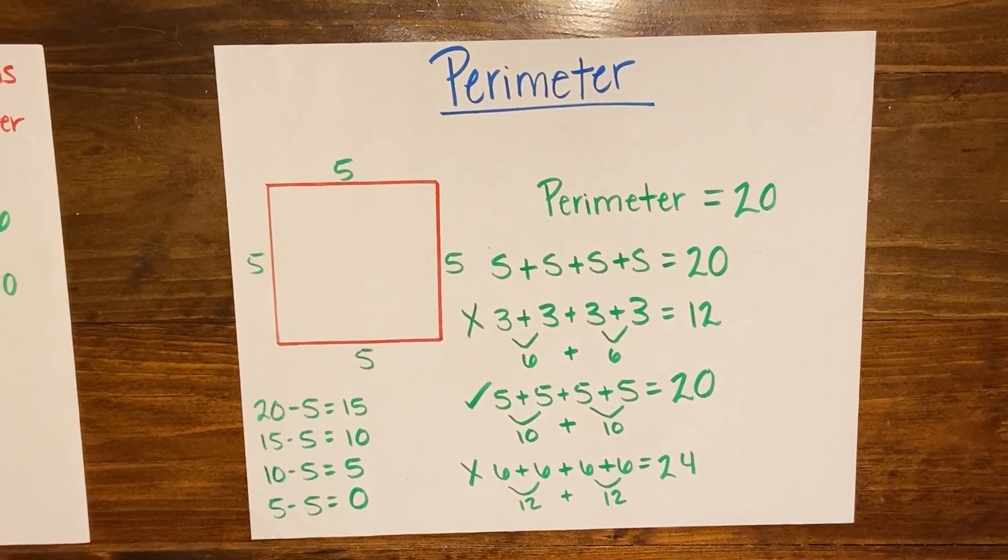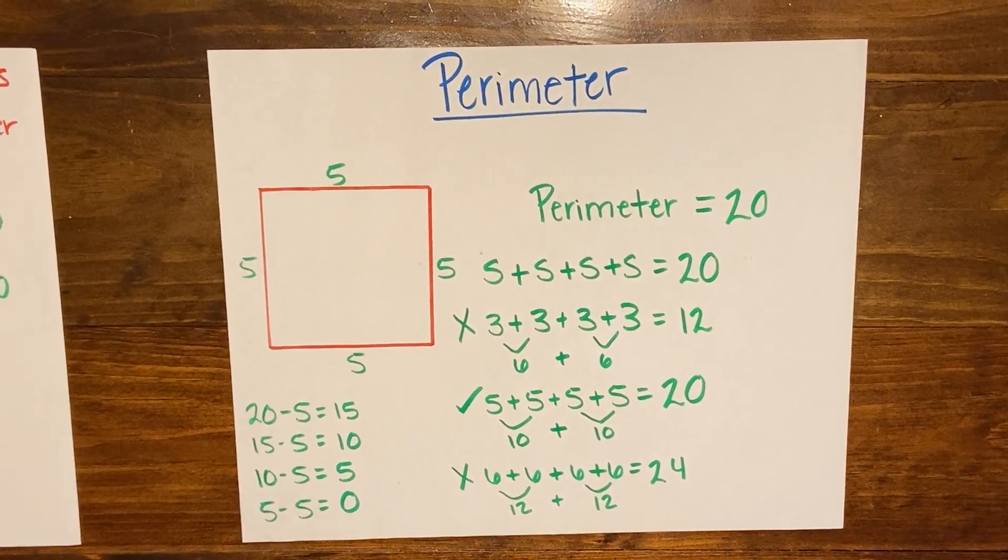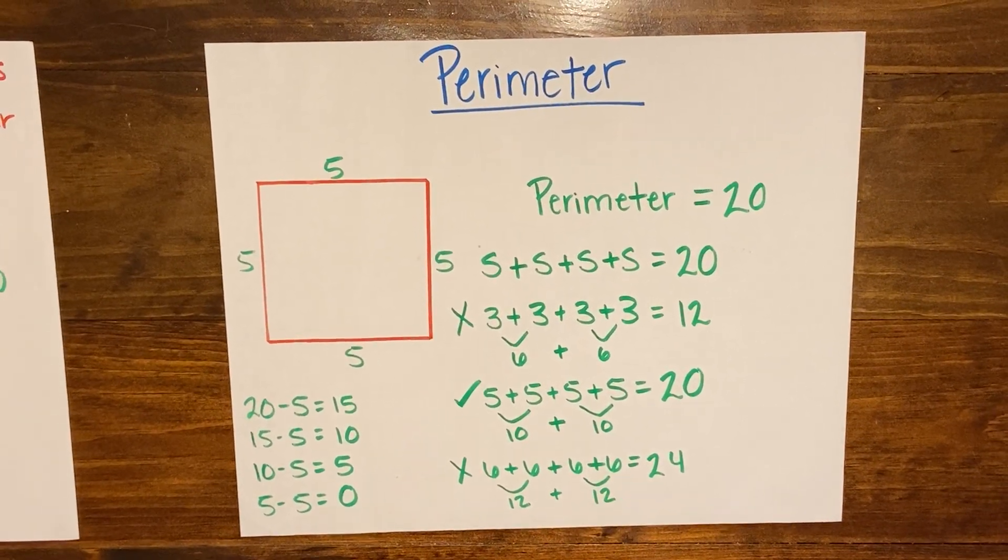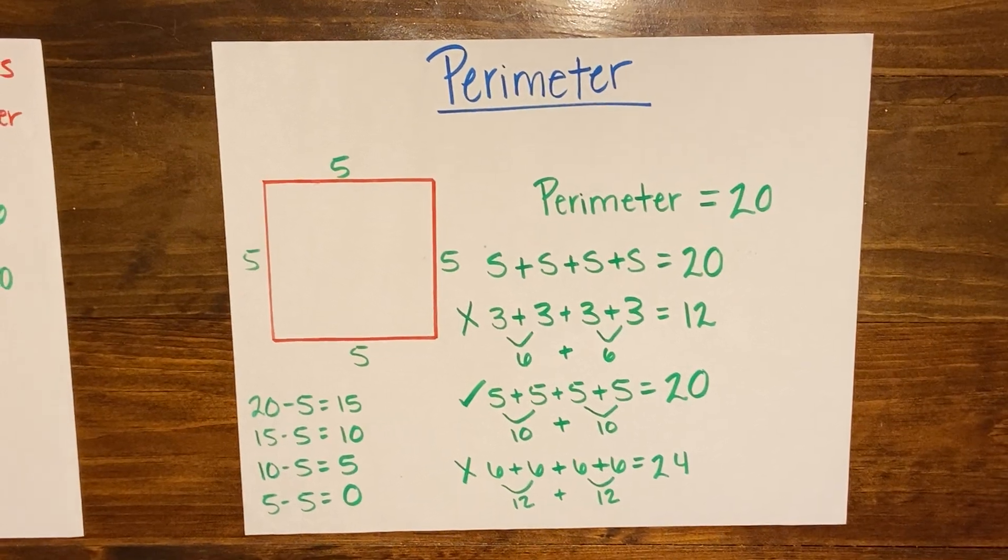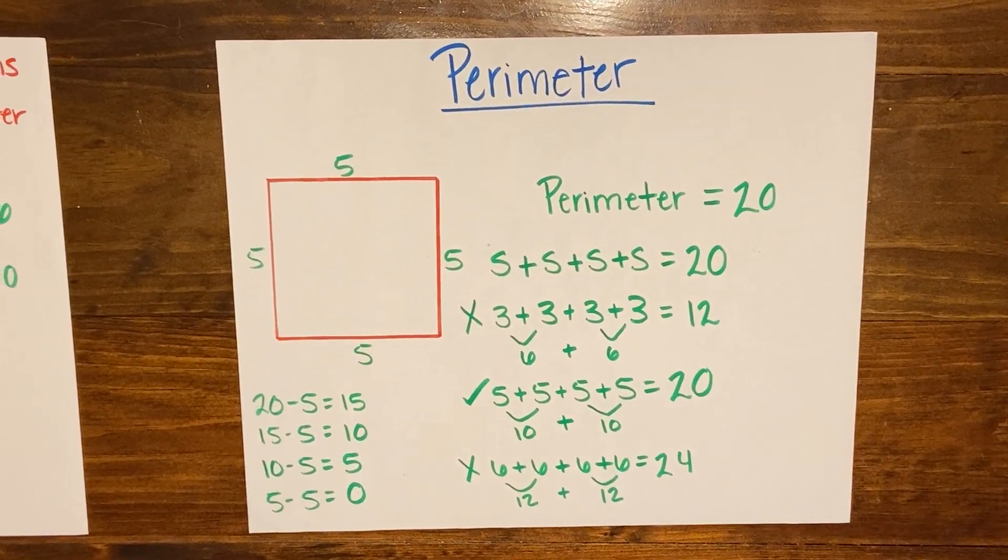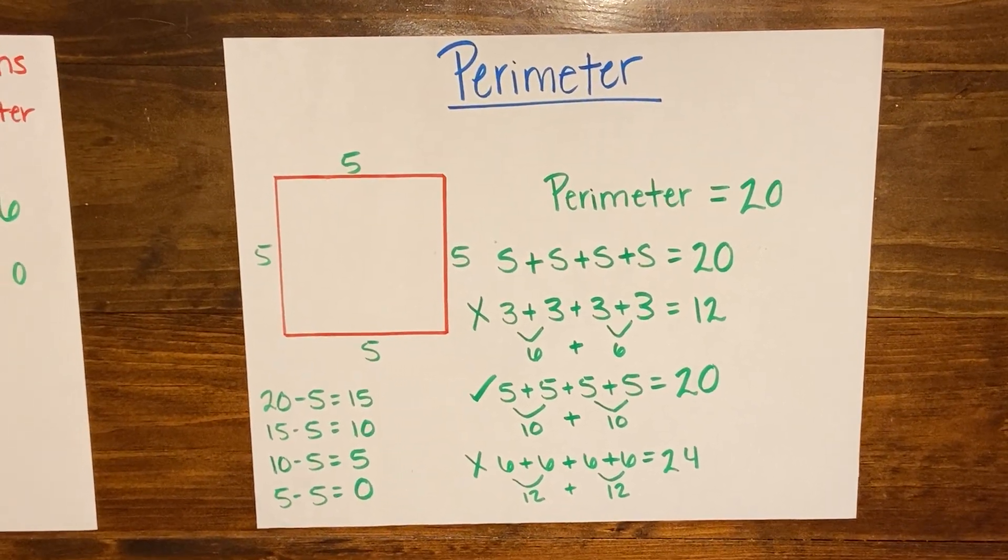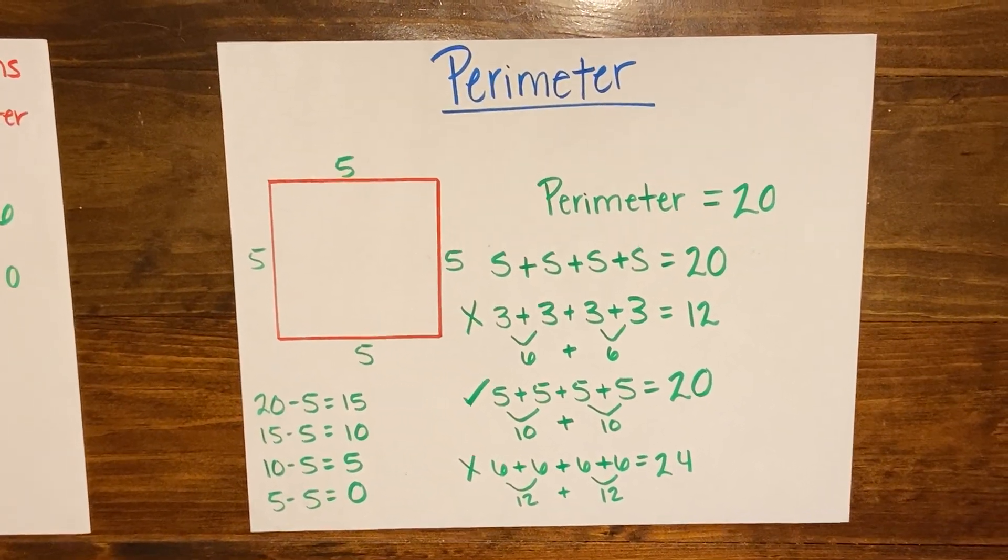Okay so remember we looked at finding the length of missing sides when given the perimeter of a square or a rectangle. Okay now you're going to try some on your own. If you need support you can stop and rewatch the video and pause when necessary. If you need additional help please reach out to your teacher.